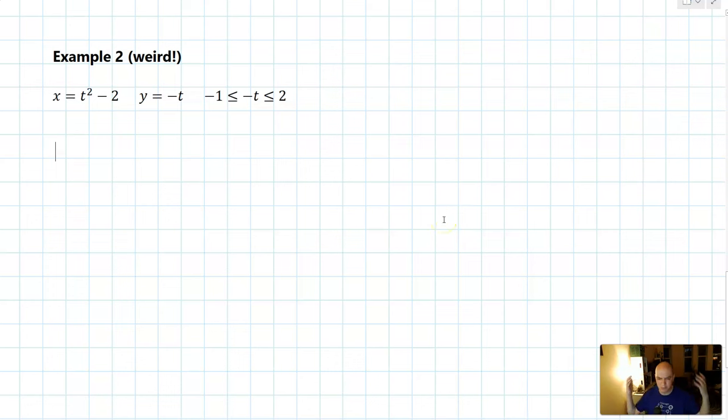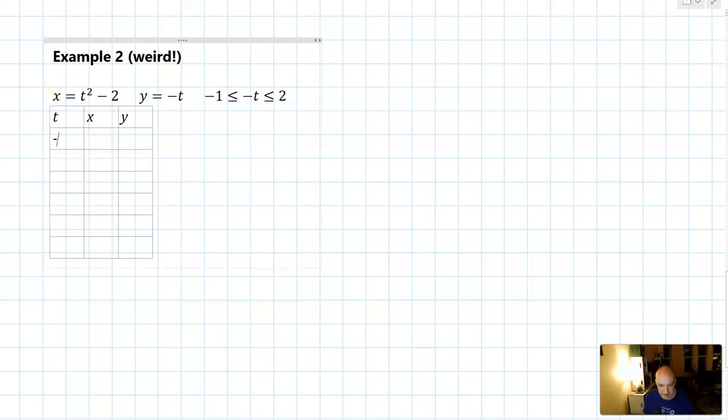Here's another example that showcases a weird property of parametric equations and some of the power of them. So we have x equals t squared minus 2, y equals negative t, and we're given bounds on t between negative 1 and positive 2. So let's go ahead and make our three-way t chart and fill in the values of t, x, and y. So we'll start with the values of t. We're going negative 1, goes to 0 and then 1 and then 2. So I only need those values.